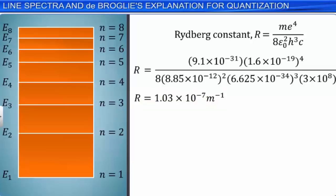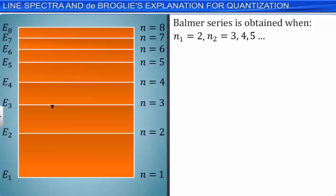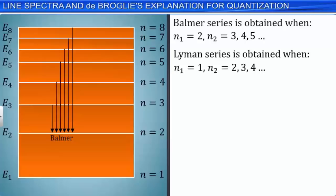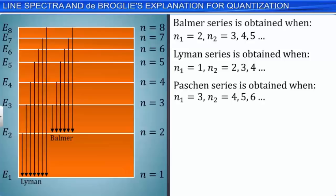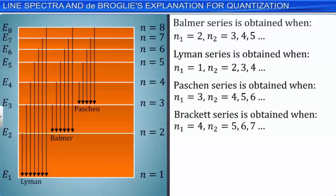When we substitute n₁ = 2 and n₂ = 3, 4, 5, and so on, we get the Balmer series. When n₁ = 1 and n₂ = 2, 3, 4, and so on, we get the Lyman series. When n₁ = 3 and n₂ = 4, 5, 6, and so on, we get the Paschen series. When n₁ = 4 and n₂ = 5, 6, 7, and so on, we get the Brackett series. When n₁ = 5 and n₂ = 6, 7, 8, and so on, we get the Pfund series. The diagram clearly shows how different atomic series are produced when electrons jump from a state of higher energy to a lower one. These lines are called emission lines.